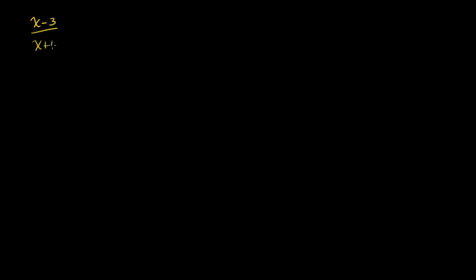Let's tackle a slightly harder problem than what we saw in the last video. I have here x minus 3 over x plus 4 is greater than or equal to 2. The reason why this is slightly harder is I now have a greater than or equal to, and I don't just have a simple 0 here — I actually have a 2 here.